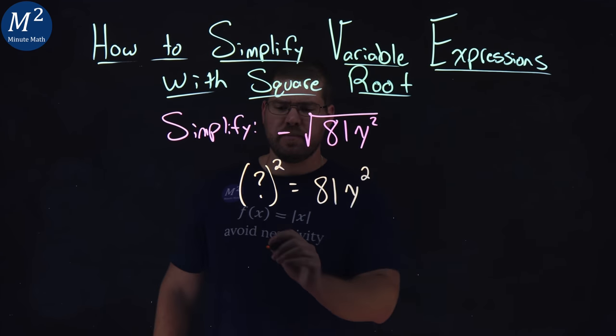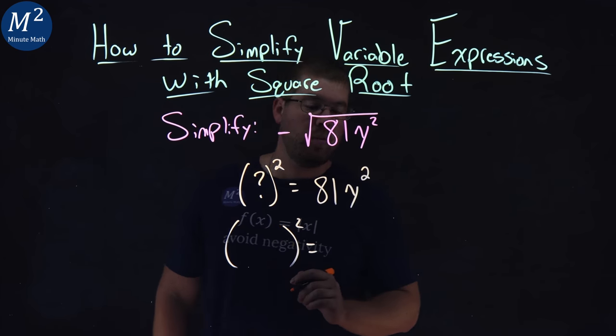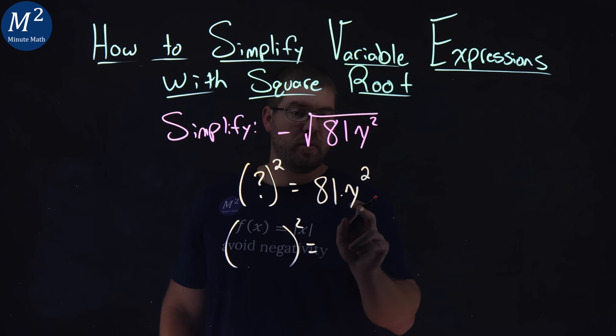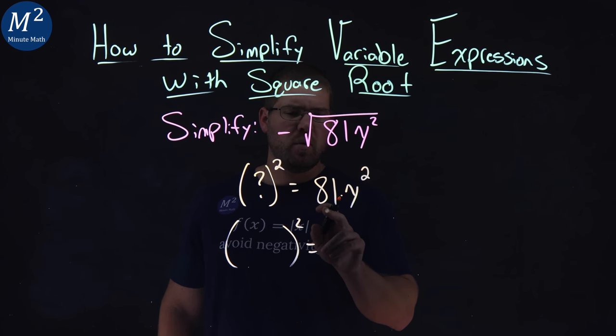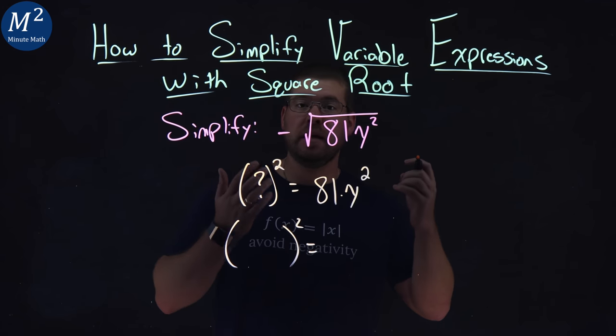So let's break this down. What squared gives me that 81y squared? Let's deal with the 81. 81 comes first, we're multiplying it by the y squared. Well, what squared gives me 81? And that's a 9. 9 squared is 81.